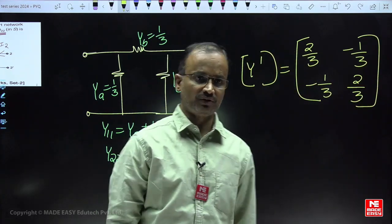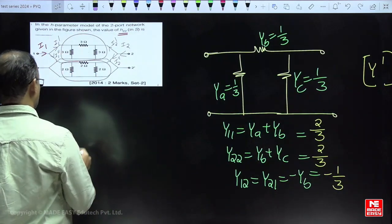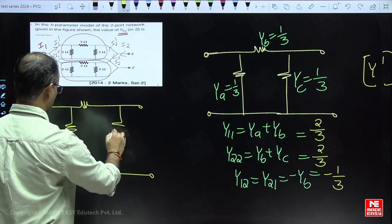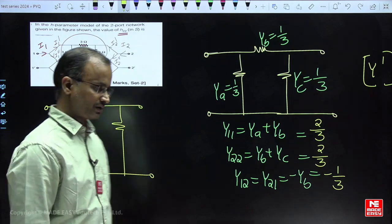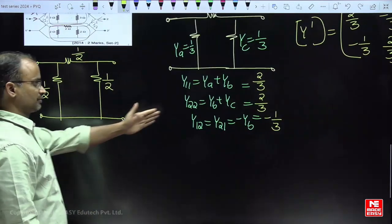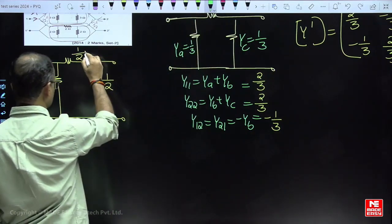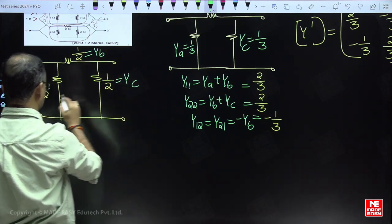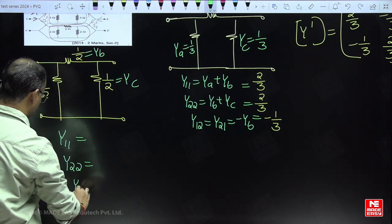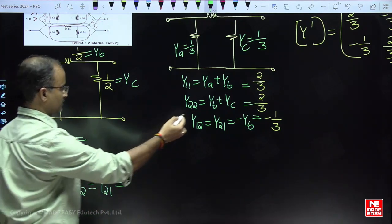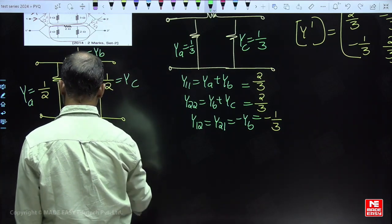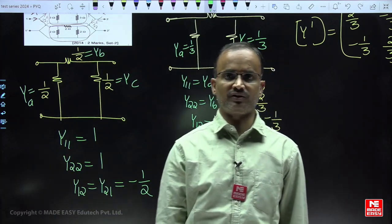Y parameters corresponding to the first two-port network are obtained. Now, we apply the same procedure to the second network as well. Convert the circuit constants to admittance form, then use the same general formulas. We conclude Y11 = 1/2, Y12 is also 1, and Y21 = −1/2. The Y parameters for the second two-port network are also obtained.